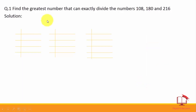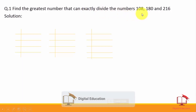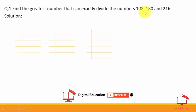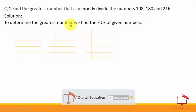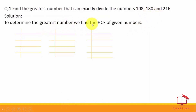Question number 1: Find the greatest number that can exactly divide the numbers 108, 180, and 216. To determine the greatest number, we find the HCF of the given numbers.